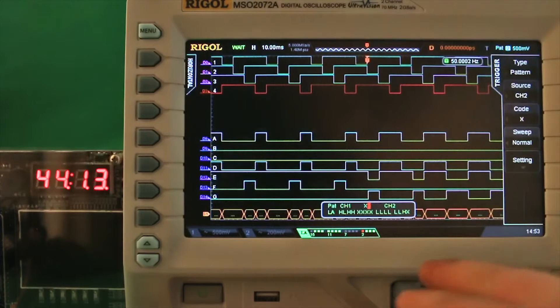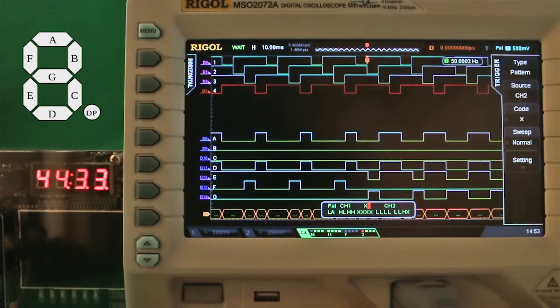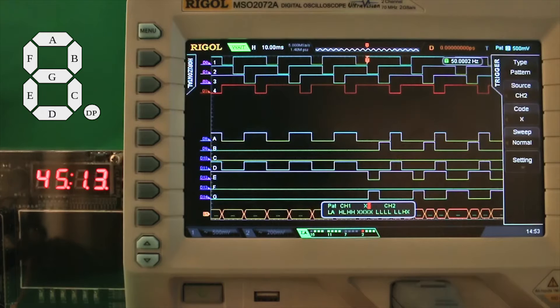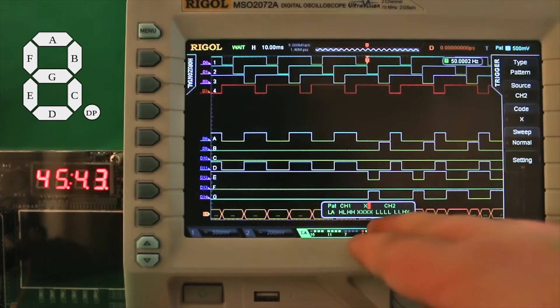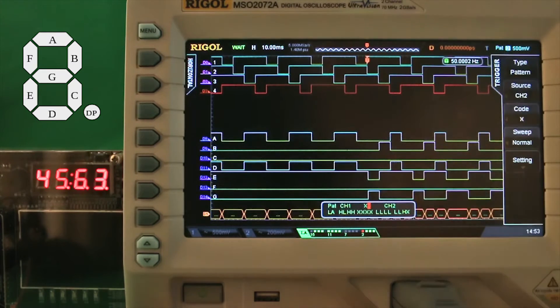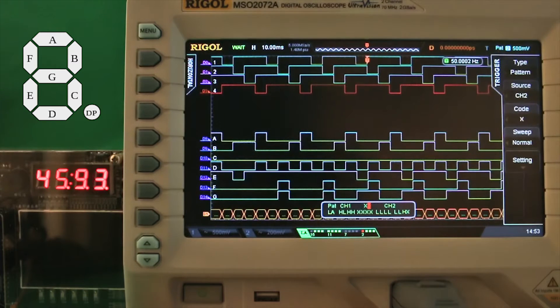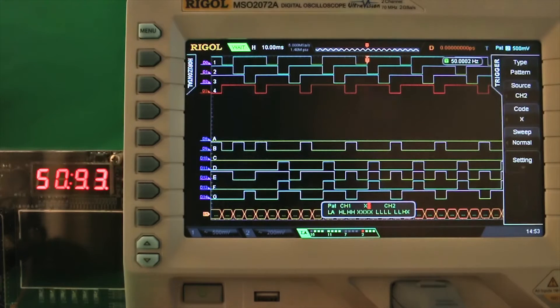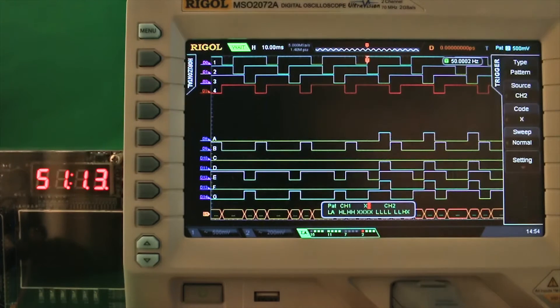Then I connected the A to G segments to the lower port of the logic analyzer, just to have it all on one port. It's more convenient. And I put all lows in it except the G, and put it high there. And that should correspond to a 0 on the segments. But it's not working. For some reason it's also triggering on the 7.